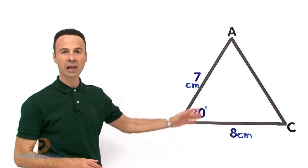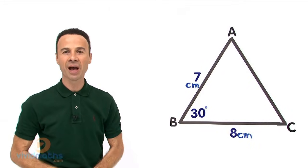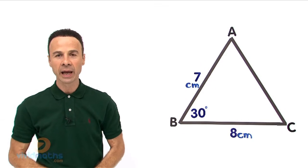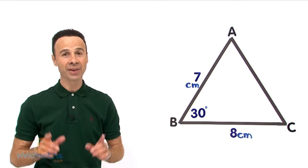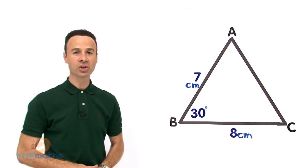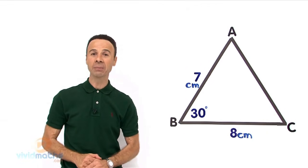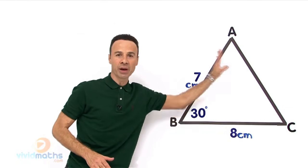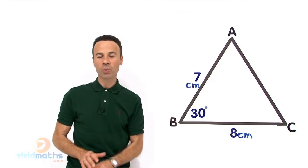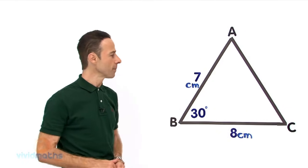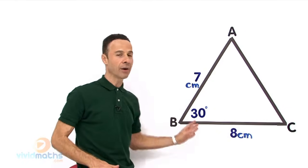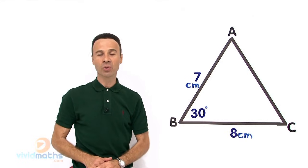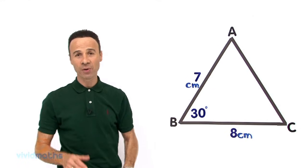Over here to my left, to your right, we have an excellent triangle and we are going to work out the area of it. It is the triangle ABC. Now that internal area is what we are going for — we want the total area. The units are in centimeters, and the first thing we are going to do is write up the formula.